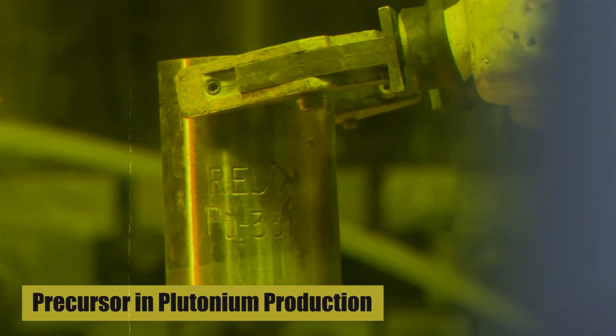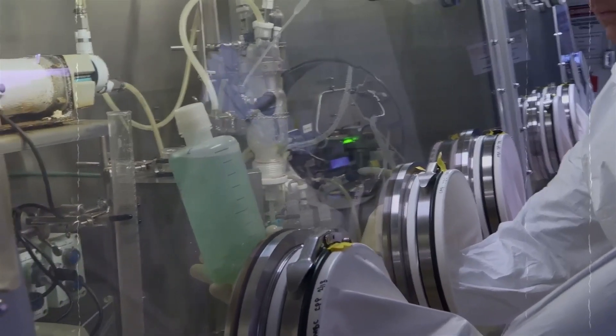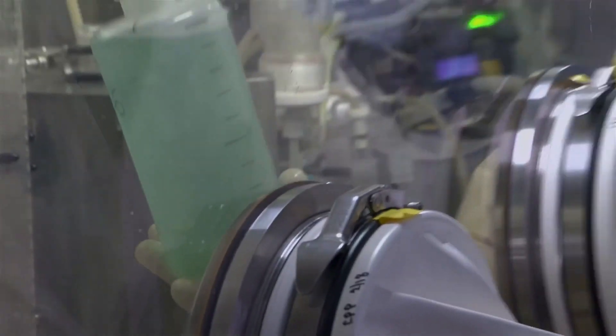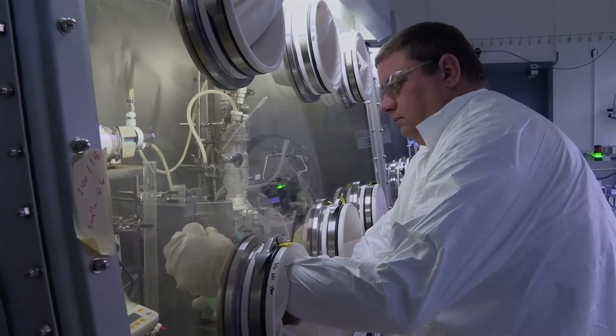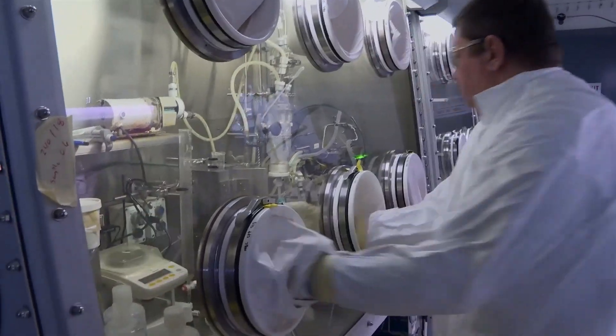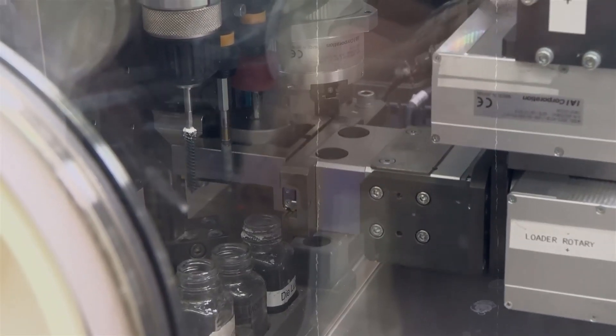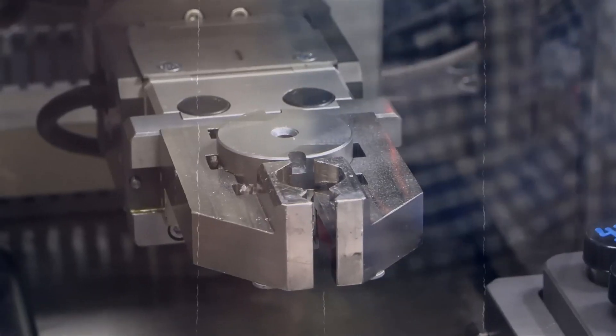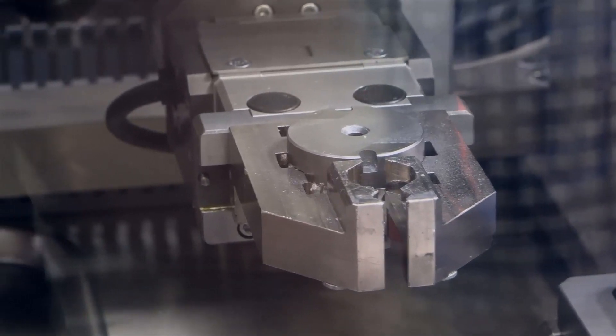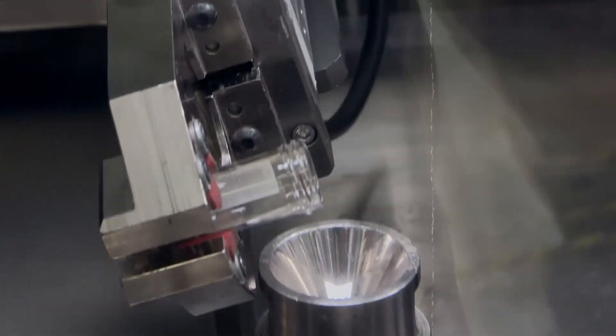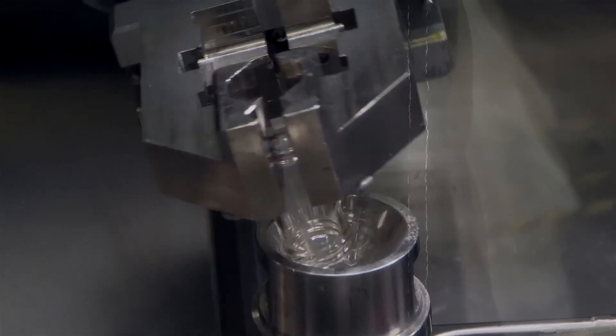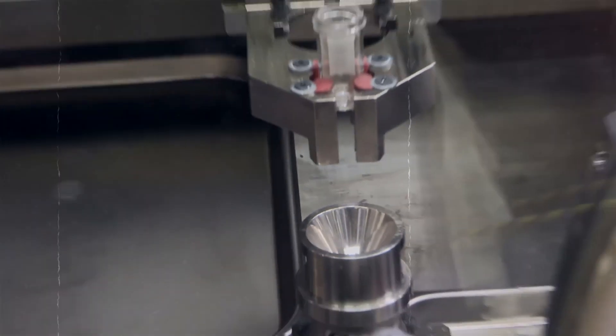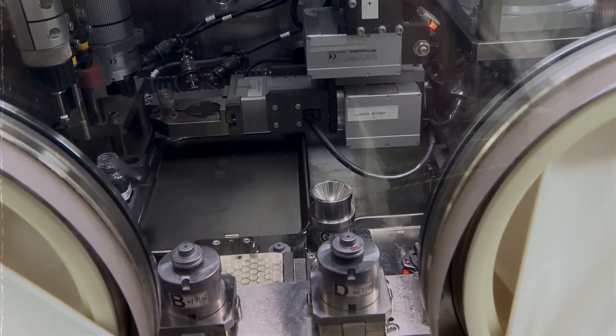Precursor in Plutonium Production: Neptunium-237 (NP-237) can be irradiated in a nuclear reactor to produce plutonium-238 through neutron capture and subsequent beta decay. PU-238 is used as a power source in radioisotope thermoelectric generators for deep space missions, where solar power is not feasible. These RTGs have been crucial in powering spacecraft like Voyager, Cassini, and the Mars Rovers.